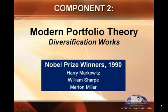Now we're going to look at the second component of free market portfolio theory, and this is modern portfolio theory, or how diversification works. This was developed using the concepts of Markowitz, Sharpe, and Miller. Modern portfolio theory is an examination of portfolio performance based on risk and return. This theory won these three men the Nobel Prize in 1990.